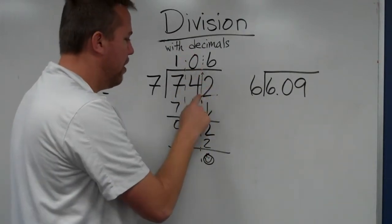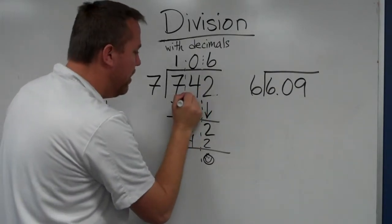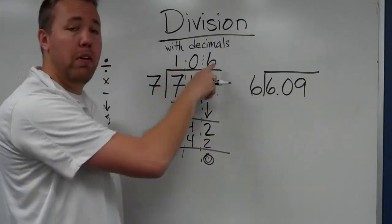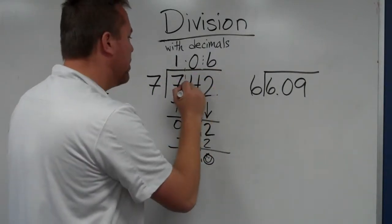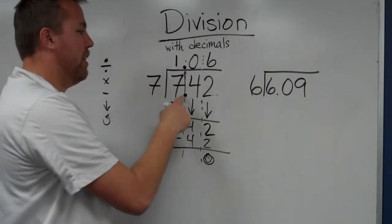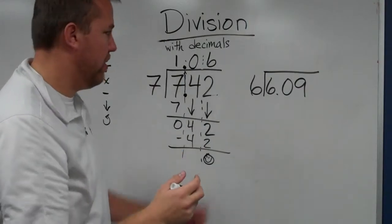Now if we were doing 7 and 42 hundredths, how would that answer change? It's still going to be 106 up top. We just bring that decimal point straight up. 7 and 42 hundredths divided by 7 equals 1 and 6 hundredths.